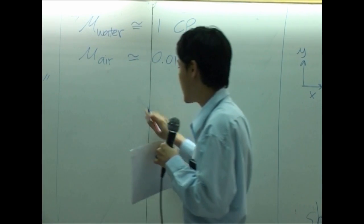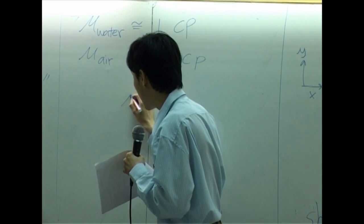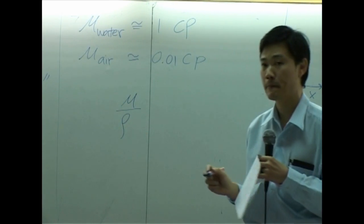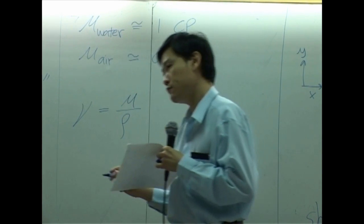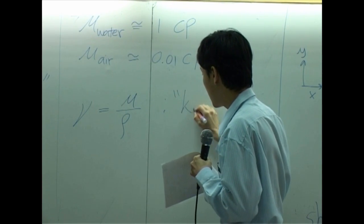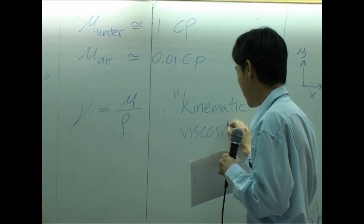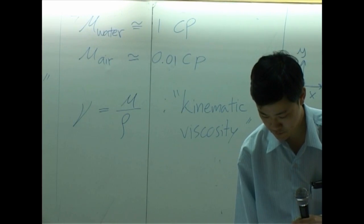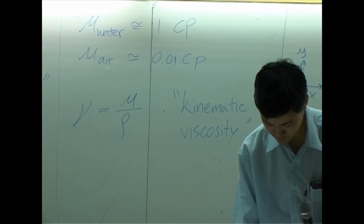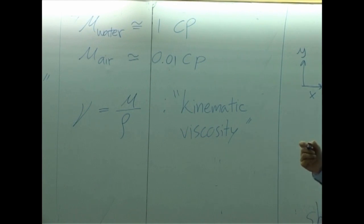But there's something that I like to emphasize. Sometimes people like to express viscosity in terms of viscosity per density. This is called nu or kinematic viscosity.